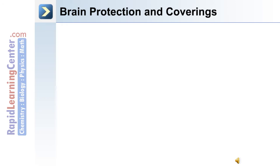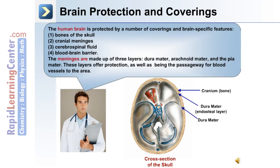Near the surface of the brain are the protective coverings. The human brain is protected by a number of coverings and brain-specific features, depicted in a cross-section of the human skull. The protective coverings are: number one, the bones of the skull; number two, the cranial meninges; number three, the cerebrospinal fluid; and number four, the blood-brain barrier. The meninges are made up of three layers: dura mater, arachnoid mater, and pia mater.